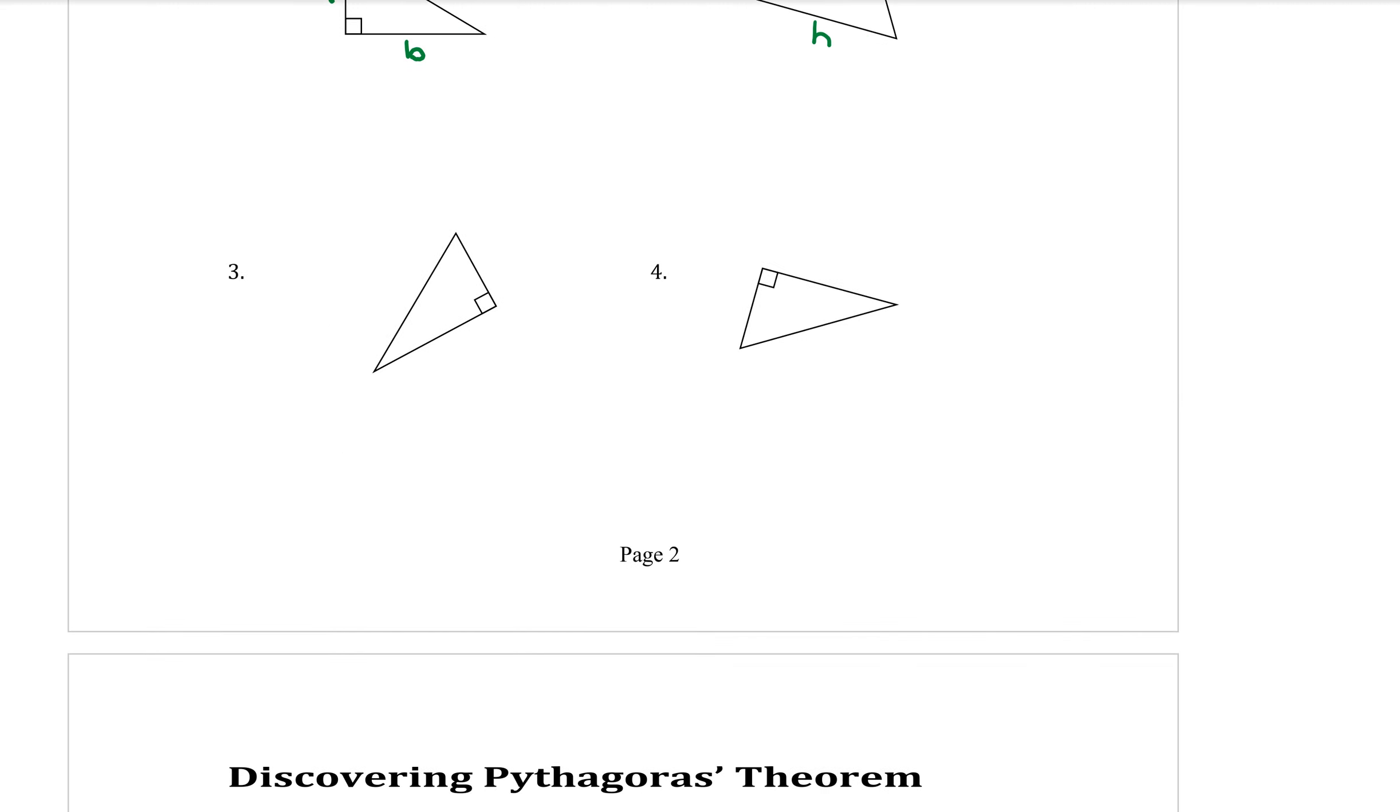Question three, the right angle is here. So a and b are the two short sides. And the hypotenuse is across from the right angle.